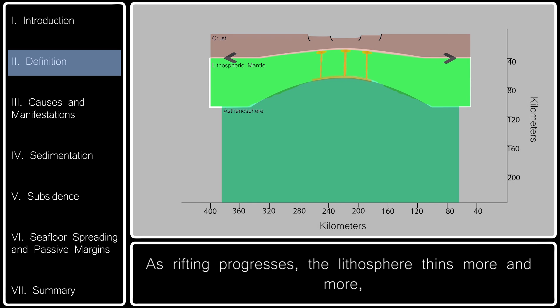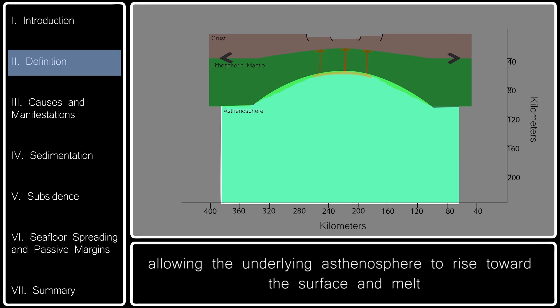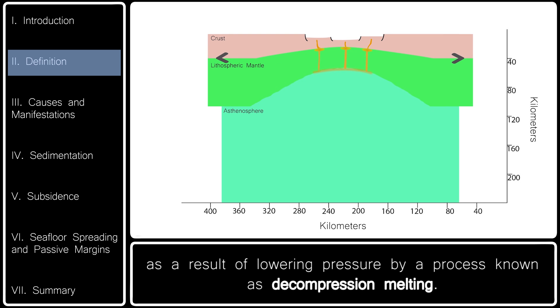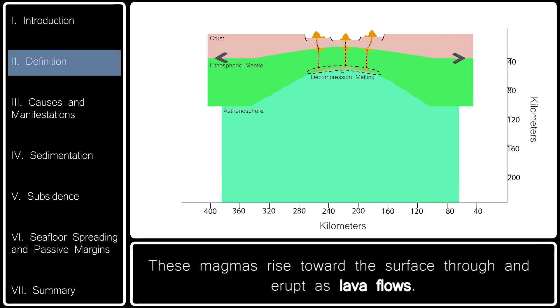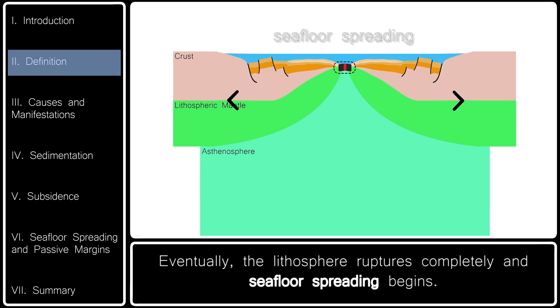As rifting progresses, the lithosphere thins more and more, allowing the underlying asthenosphere to rise toward the surface and melt as a result of lowering pressure by a process known as decompression melting. These magmas rise toward the surface and erupt as lava flows. Eventually, the lithosphere ruptures completely and seafloor spreading begins.